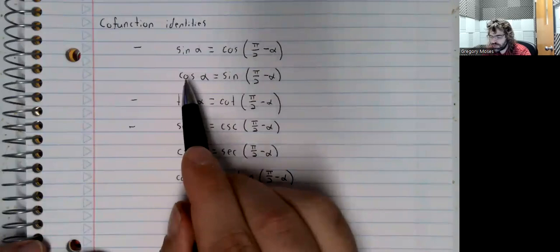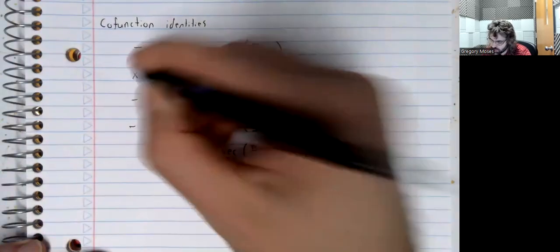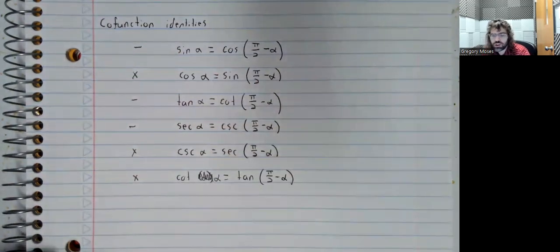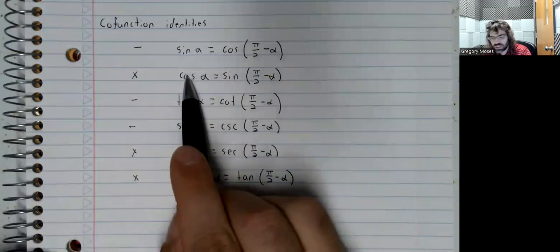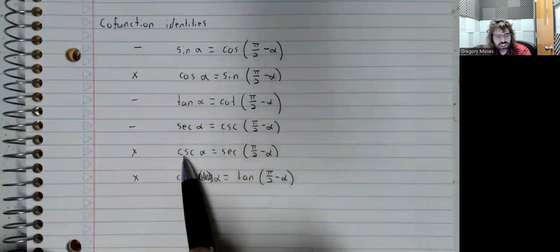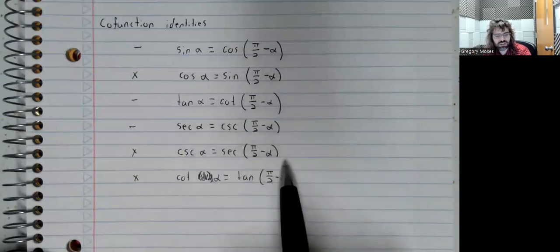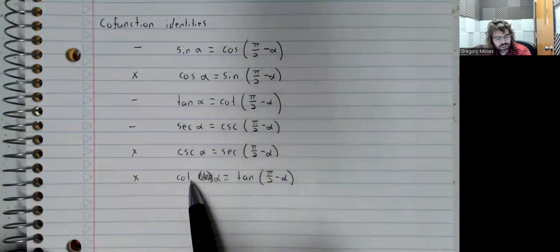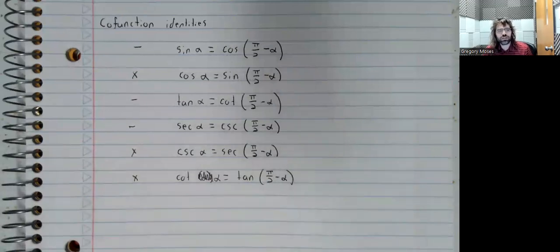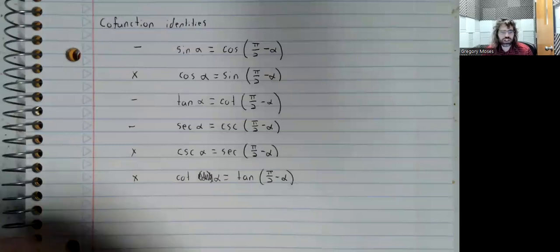And then the co-functions, the cosine, the cosecant, and the cotangent, are the non-co-function of the same difference. The cosine is the sine of this subtraction. The cosecant is the secant of this subtraction. And the cotangent is the tangent of this subtraction. And those are the co-function identities.